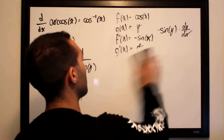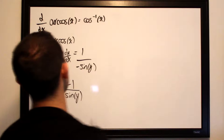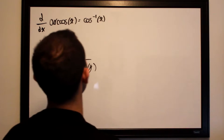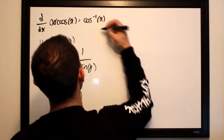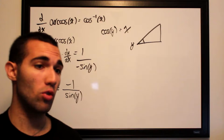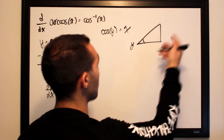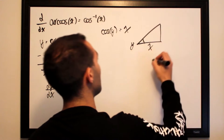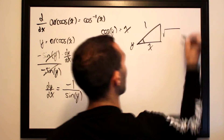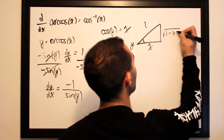Now we construct a right triangle using the assumption that cosine of y equals x. Since y equals arc cosine of x, the cosine of y equals x. We set up the triangle with angle y, where the adjacent side is x and the hypotenuse is 1, so we need to solve for the missing side using the Pythagorean theorem.